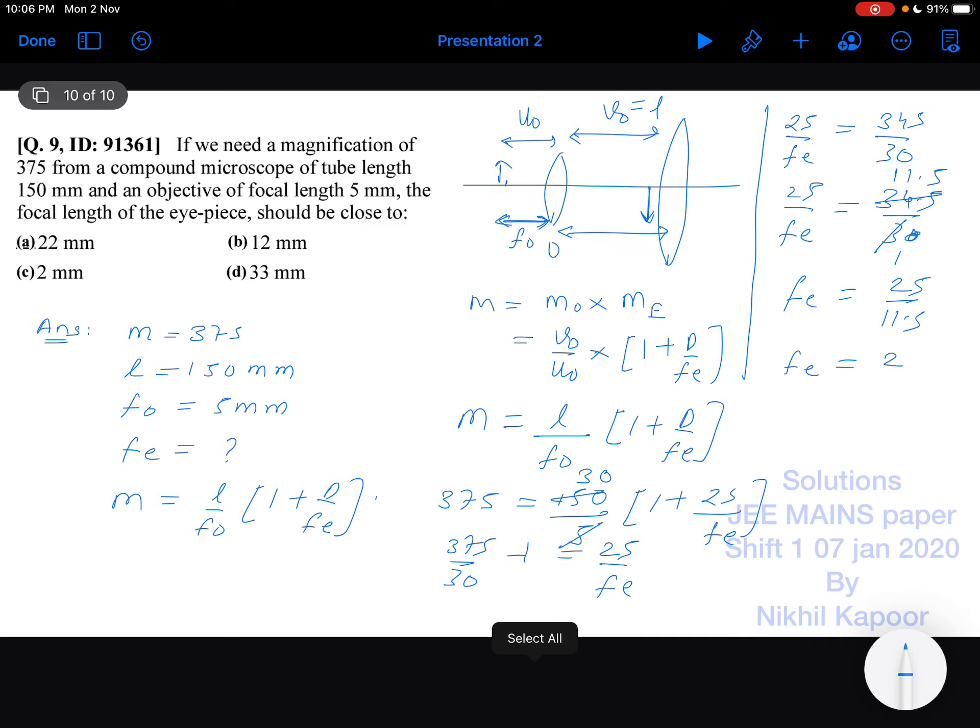Calculating this division, it comes out to approximately 22 mm, which will be the focal length for the eyepiece. Thank you.